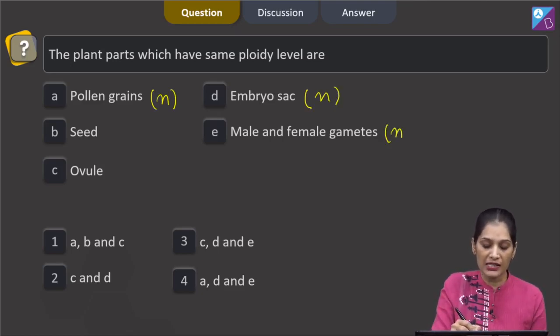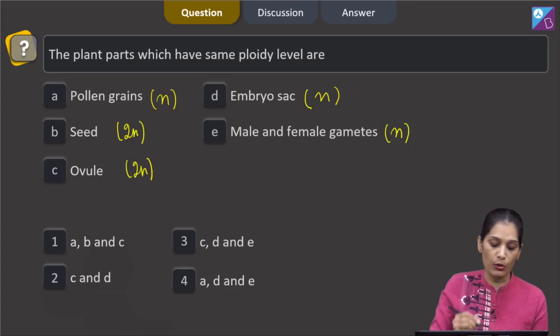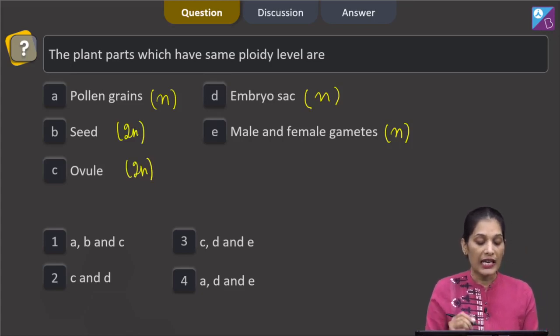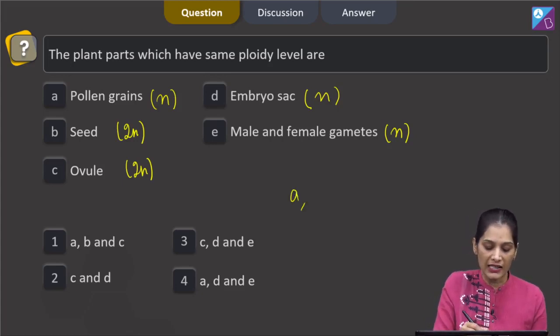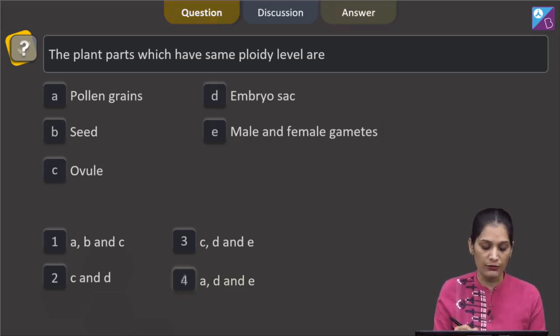The male and the female gametes they are also haploid. Seed is diploid, ovule is diploid. So here A, D and E they share the same ploidy level which is haploid. B and C share the same ploidy level which is diploid. So we can say A, D and E they are haploid, B and C they are diploid. If we see the options, we can say the correct option for the given question is option number 4, that is A, D and E.